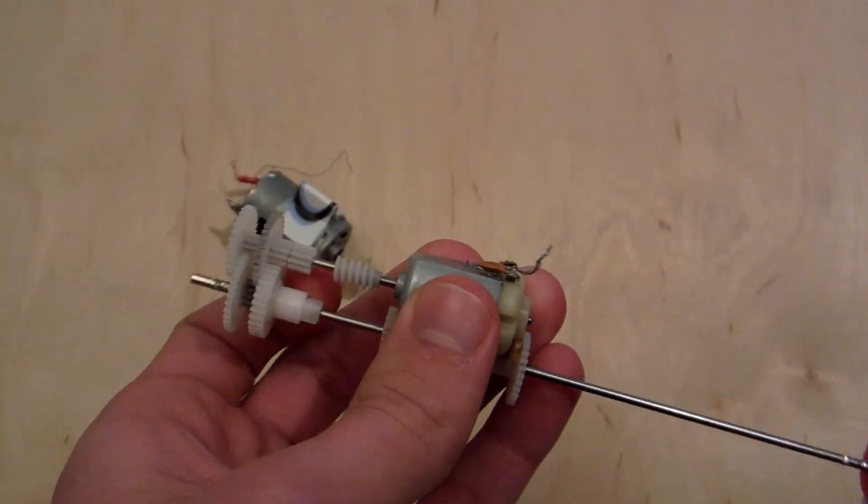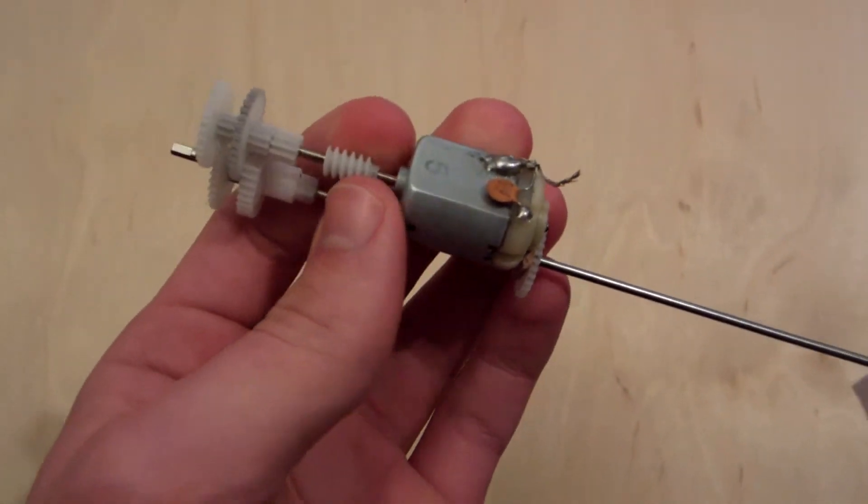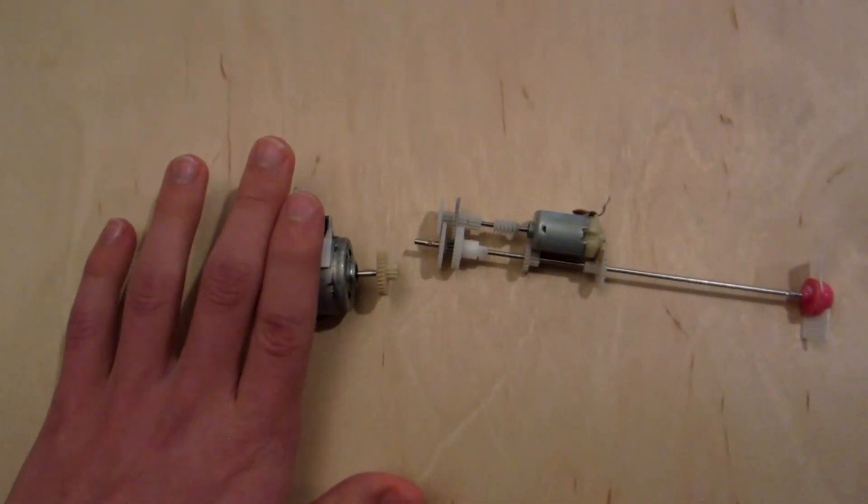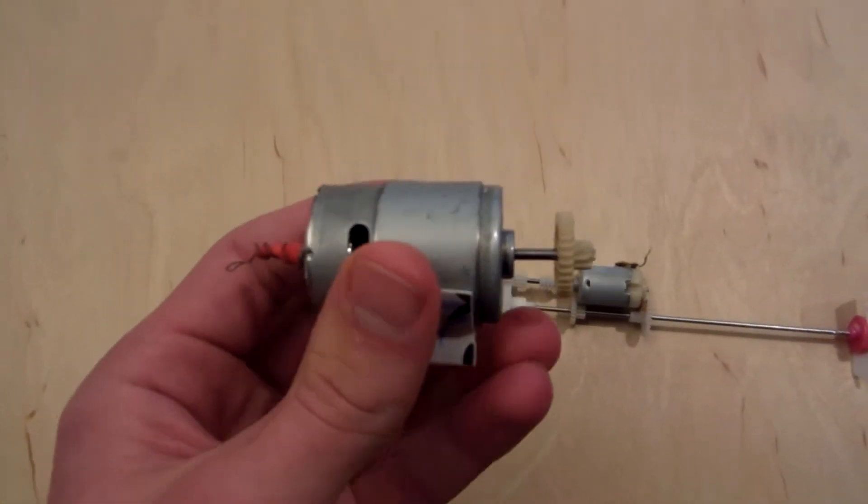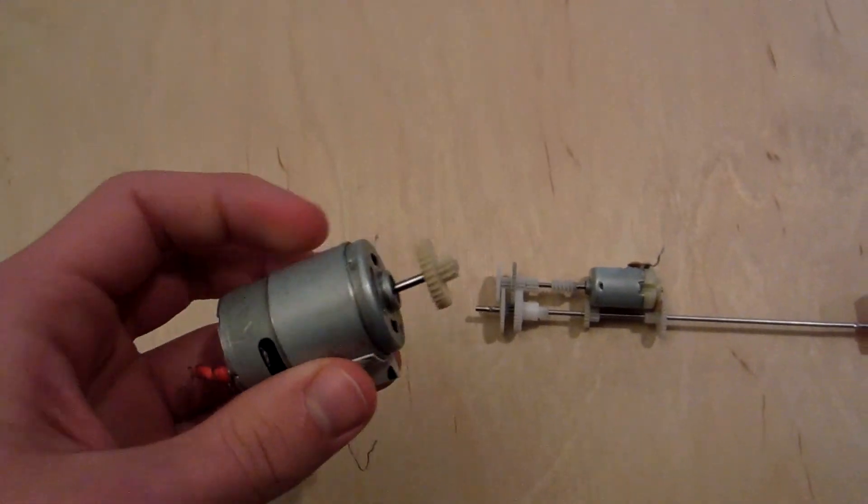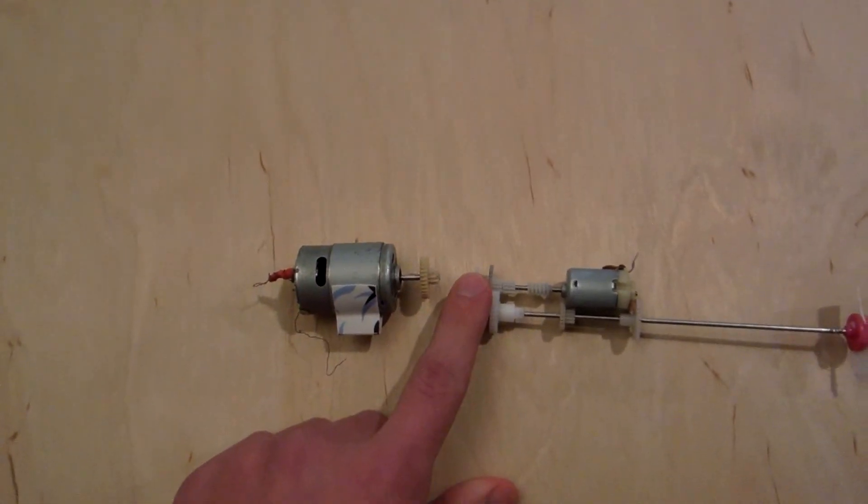So that's my two-speed transmission. So I'll be covering next, in the second video, how to attach my 380 speed 8.4 volt motor to this transmission. So that's my two-speed transmission.